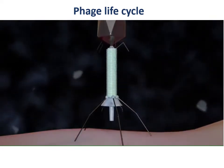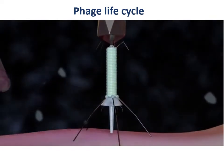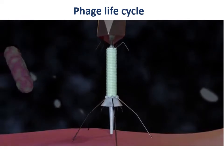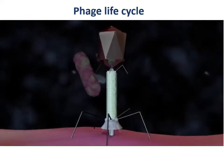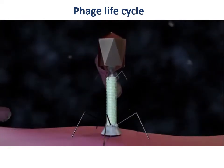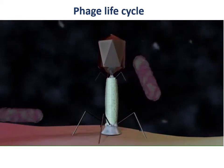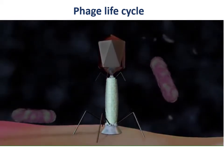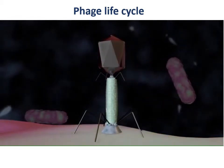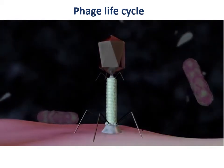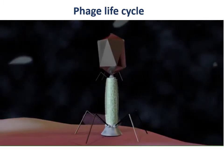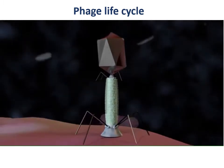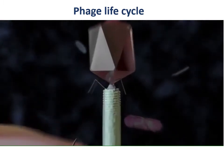The base plate changes conformation and the tail sheath contracts, causing GP5 at the end of the tail tube to puncture the outer membrane of the cell. The lysosome domain of GP5 is activated and degrades the periplasmic peptidoglycan layer.